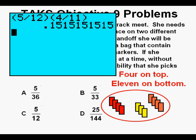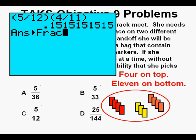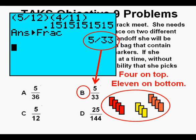Press Enter to multiply. We get the repeating decimal 0.1515, etc. A repeating decimal usually means it's a fraction in decimal form. To find the fractional equivalent, press the Math key on the upper left of the keypad, press Enter, press Enter again. We get 5 over 33, and that's answer B. So we circle our correct answer B.